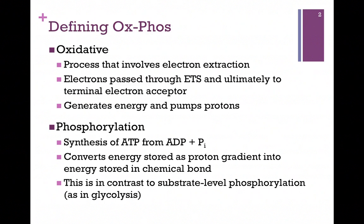The phosphorylation portion refers to phosphorylating ADP to form ATP. So we're going to convert the energy that's stored in the proton gradient into the chemical energy stored in ATP. Notice that this is in contrast to substrate-level phosphorylation, which we've seen thus far, where we make ATP at the level of the individual enzyme or substrate.